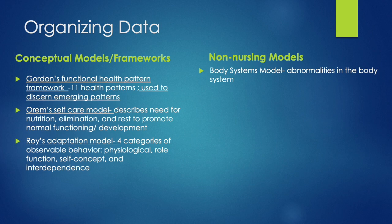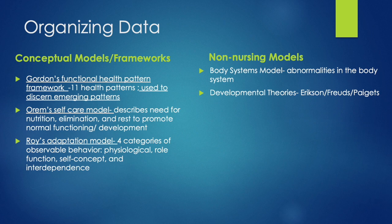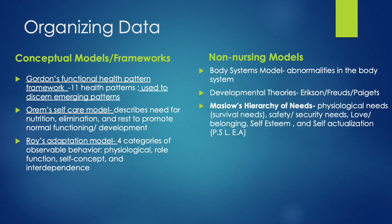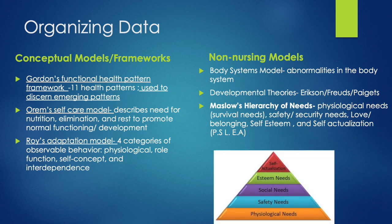The first non-nursing model is the body system model, which notates abnormalities in the body system. Next are developmental theories by psychologists such as Erikson, Freud, and Piaget — you'll learn more about these in psychology and human growth and development. Lastly is Maslow's hierarchy of needs, shown as a pyramid with physiological needs as the base and most important — these are your survival needs. Next is safety and security, then love and belonging (social needs), then self-esteem, and finally self-actualization. You'll use Maslow's hierarchy to determine priority when writing your nursing care plan.